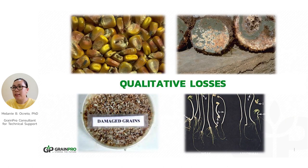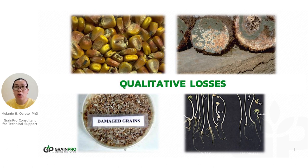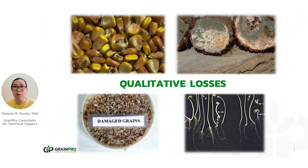The next type is qualitative losses. Qualitative losses have an impact because, for example, molds cause lower cost for the commodity. If seed germination and vigor are affected, some produce is rejected and goes to waste. If it's for export and it's really infested, it would incur additional loss because of fumigation or re-fumigation at the destination. Qualitative loss has a lot of impact.